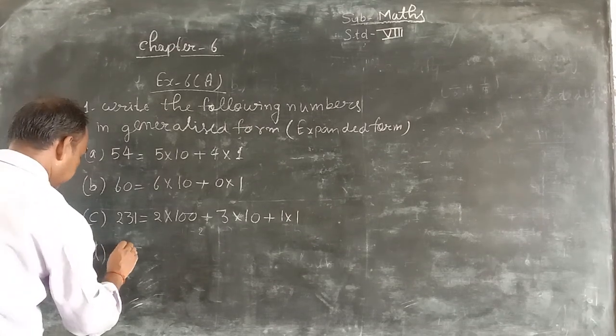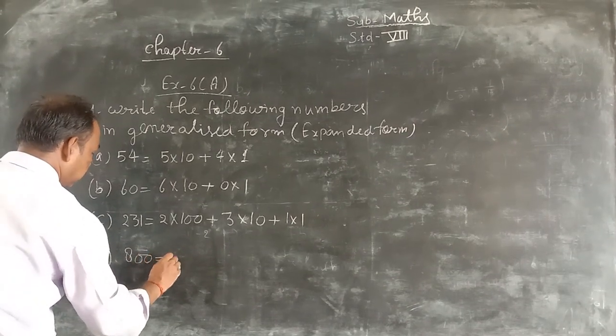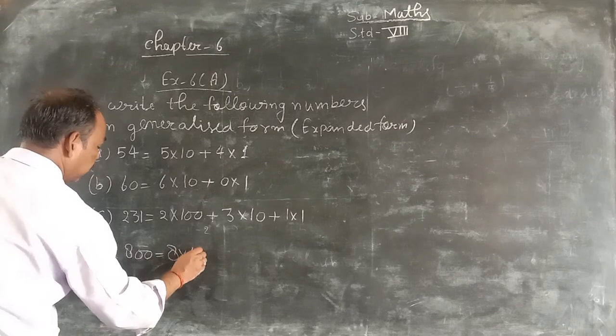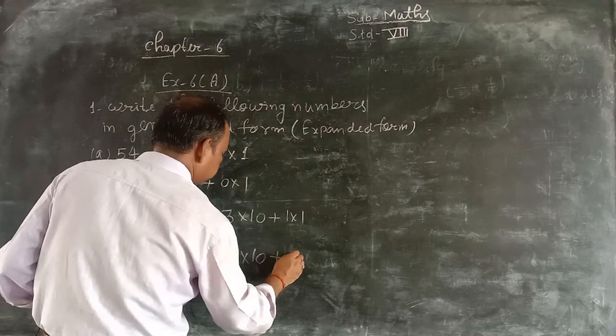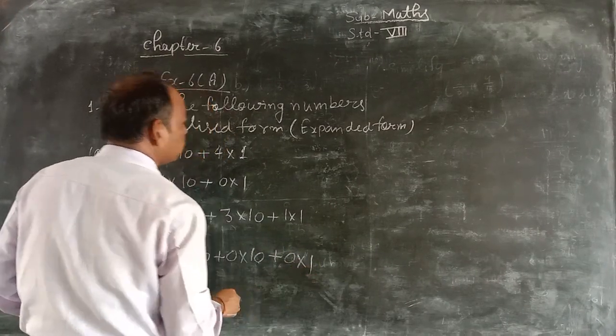Part number d, 800. 8 multiply 100 plus 0 multiply 10 plus 0 multiply 1.